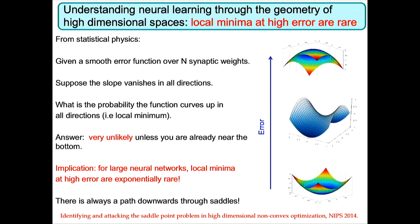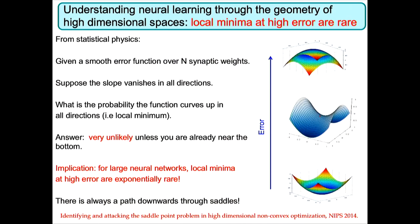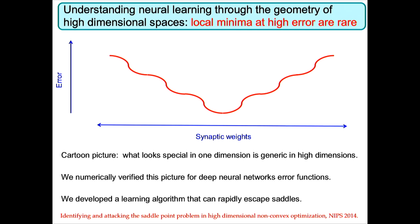If you have some smooth function over a million variables and the slope vanishes at some point, what are the chances the function is a local minimum that curves up in all one million dimensions? The answer is it's exponentially unlikely, unless you're already near the bottom. So for large neural networks, local minima at high error are very rare. Instead you get saddle points — there's always a pathway down. We verified this picture numerically in deep networks, but there's still a problem: a ball rolling down a saddle still slows down. So we developed a better algorithm to speed up learning around these saddles, and it outperformed existing algorithms.